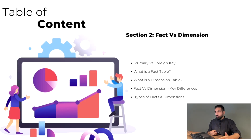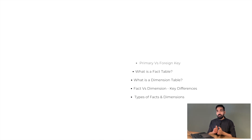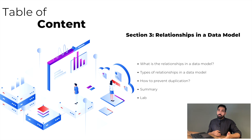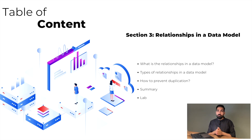In the second section you will get to know about facts versus dimensions: what is a fact table, what is a dimension table, what is a primary key, what is a foreign key, why you need them in your data model, and the different types of facts and dimensions. In section three you will learn about relationships in a data model - what a relationship is, why you need it, what are the different kinds, and we will have a small lab on relationships.